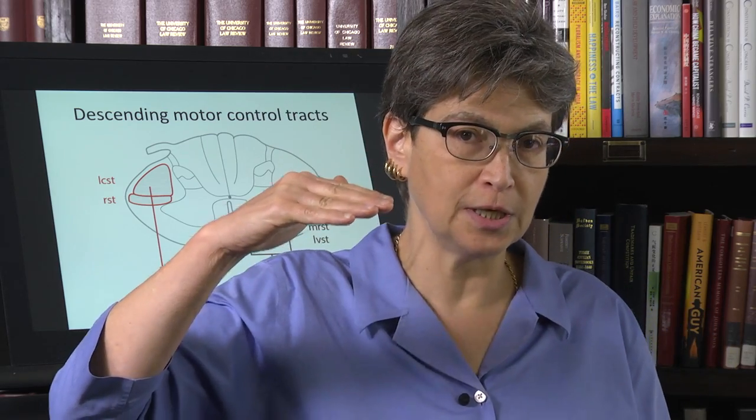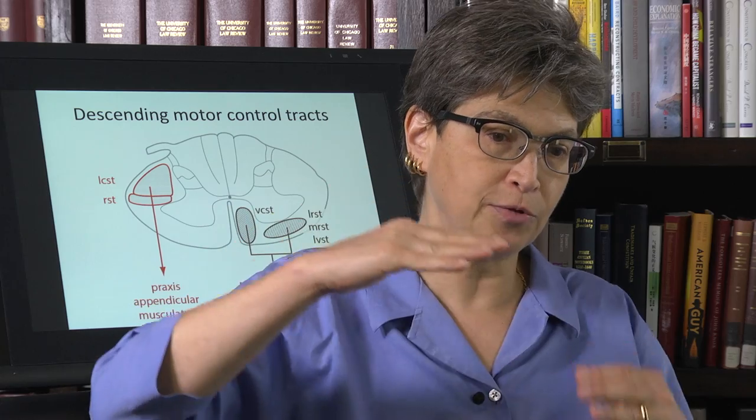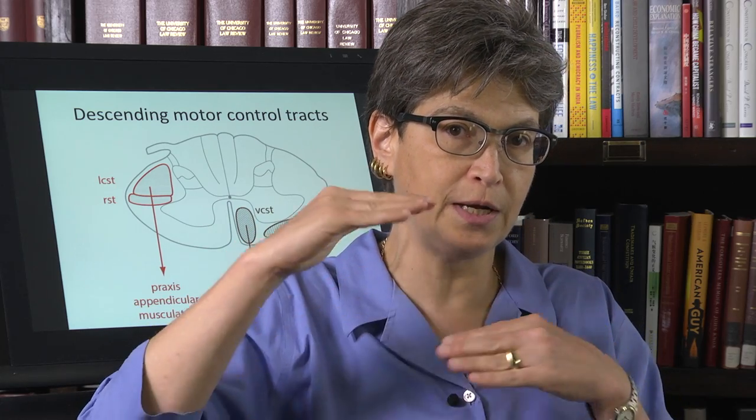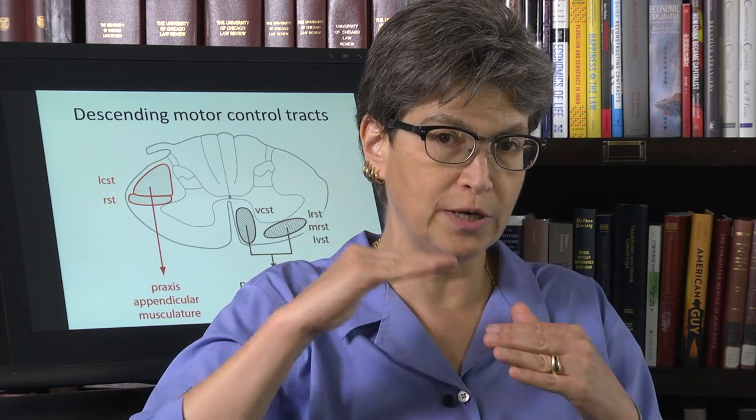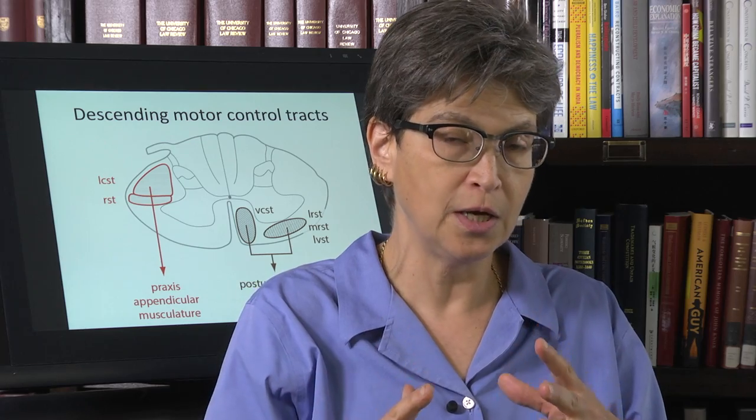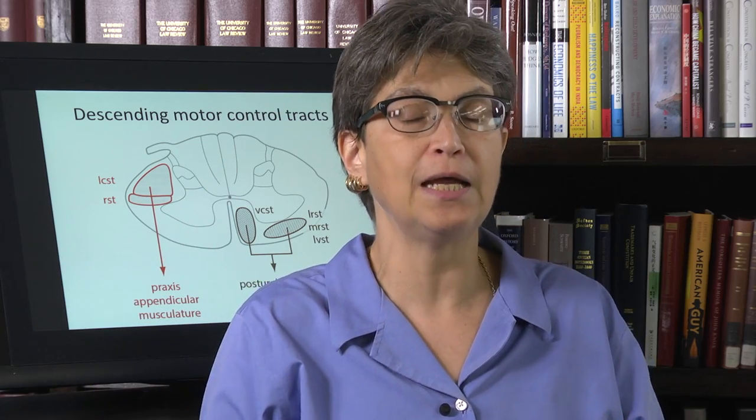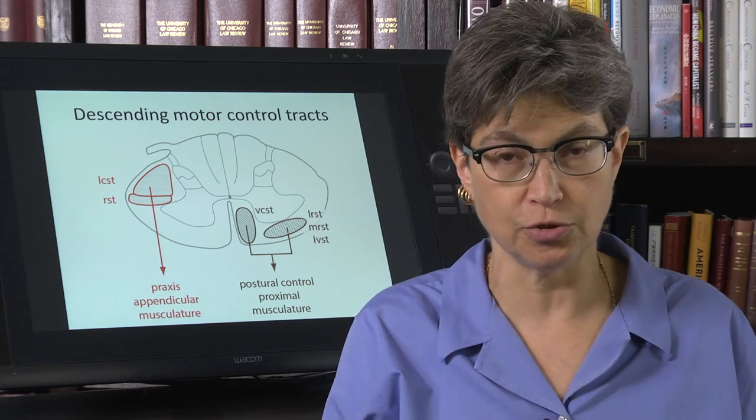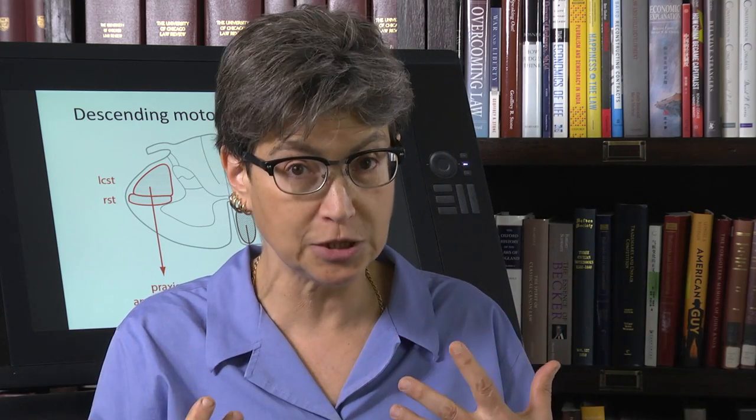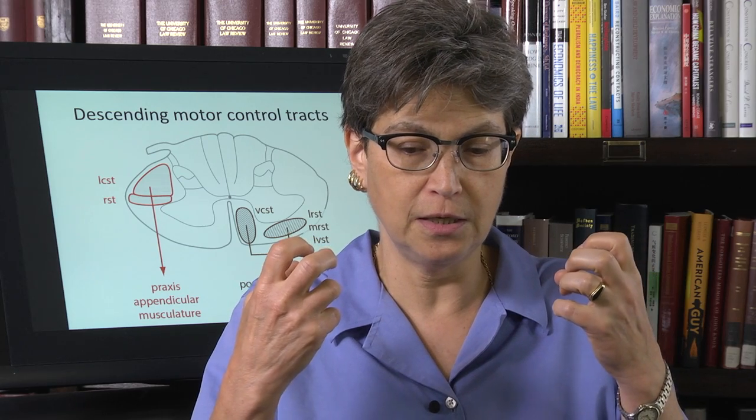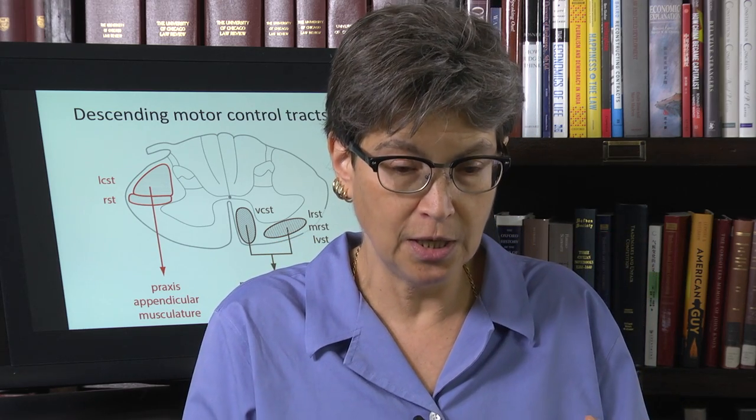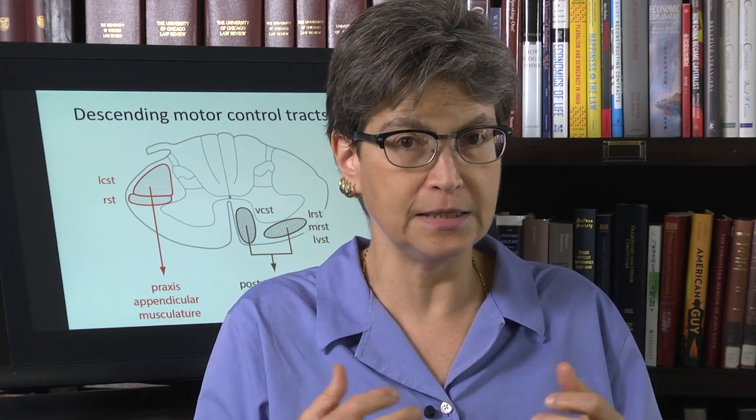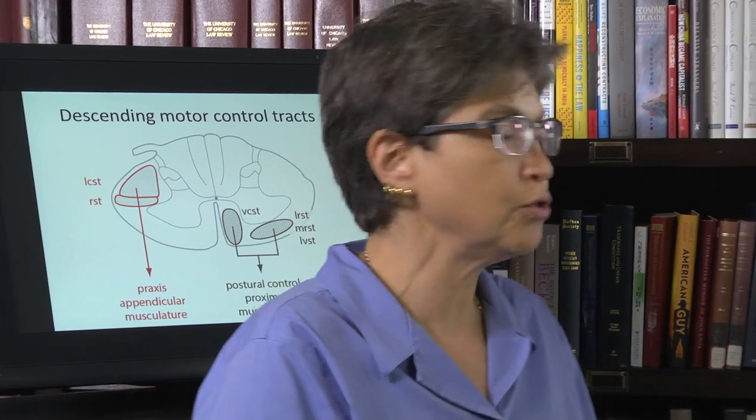Now, if there is a lesion around the junction of the midbrain and the diencephalon or in the rostral midbrain or caudal to that, a person can adopt a posture. This type of posturing is a fixed position. And it's a sign of some pretty serious damage in the brainstem. And so there are two postures that you have to know.